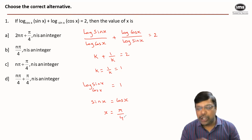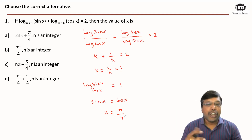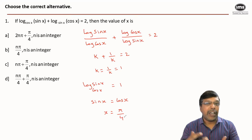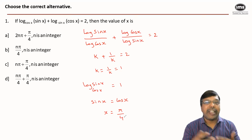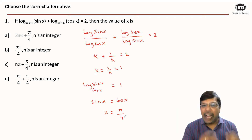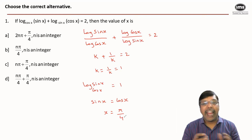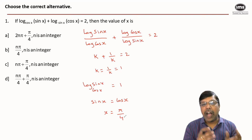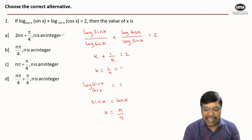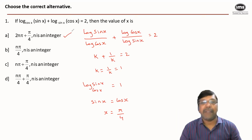If you are unsure of that, you can substitute n = 1, 2, 3 and see that in option A, every time it gives you a value that is equivalent to π/4. Hence the right answer is option A.